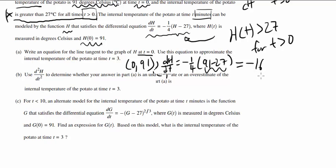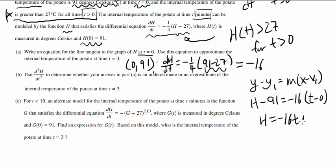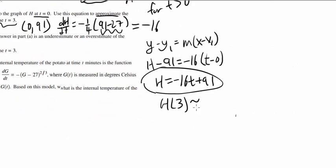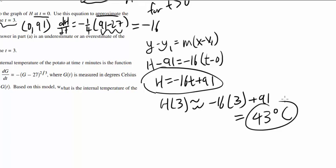And now you're just plugging this into point slope form. y minus y1 equals slope times x minus x1. In this case it's not y, it's actually h. So we got h minus some value of h which is 91 equals slope of negative 16 times the time, in this case t, minus zero that gets us h equals negative 16t plus 91. What else do they want us to do? Use this equation to approximate the internal temperature of the potato at t equals 3. That's just plugging things in. And h(3) is approximately negative 16 times 3 plus 91 which gets us 43 degrees Celsius. So that's the answer for a.